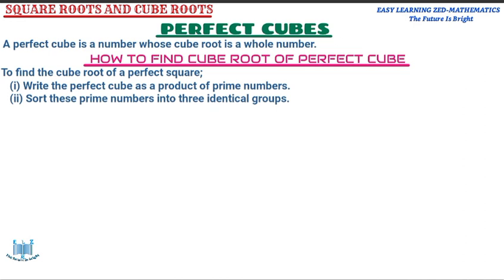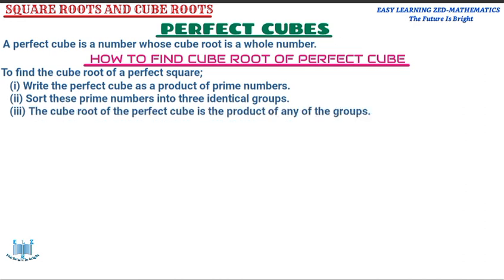Once you have expressed the perfect cube as a product of prime numbers, sort those prime numbers into three identical groups. Once you've done that, find the product of the expressions in each group. The cube root of the perfect cube is the product of any one of those groups — since the groups are identical, they will all give the same number.